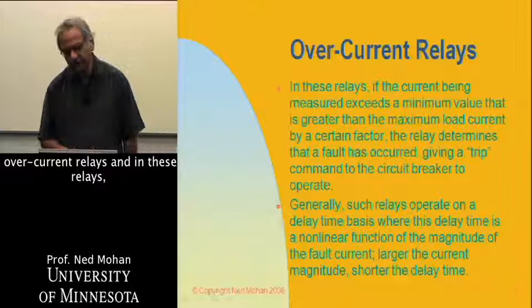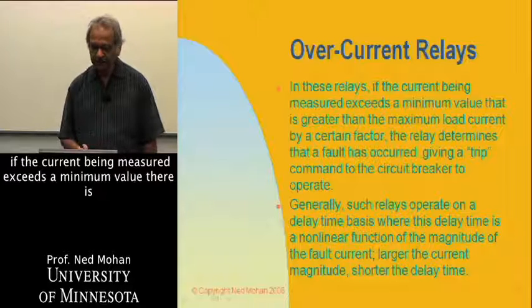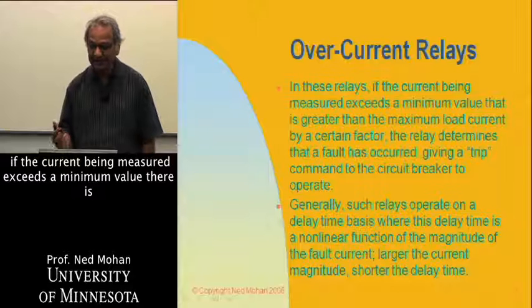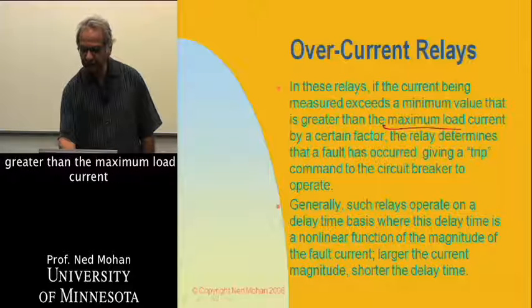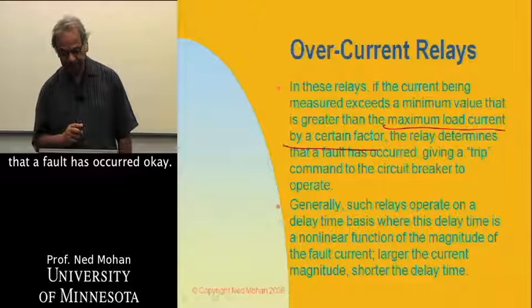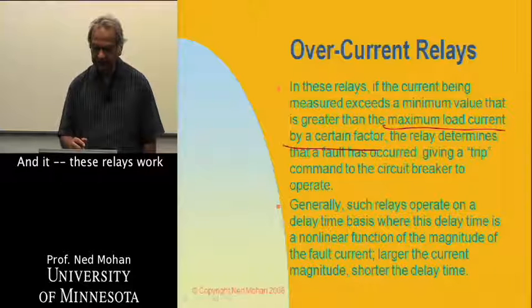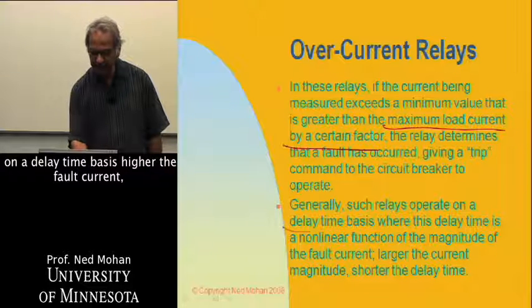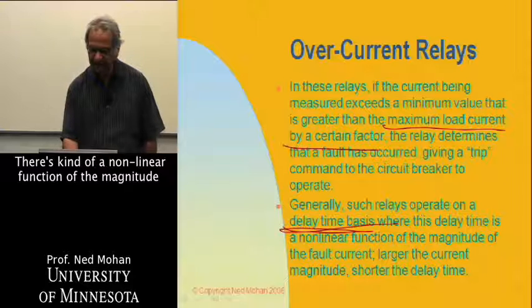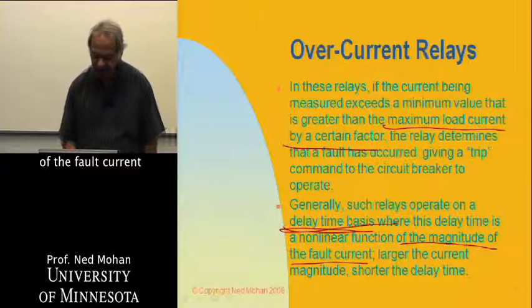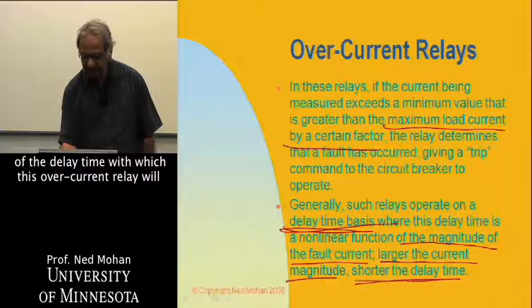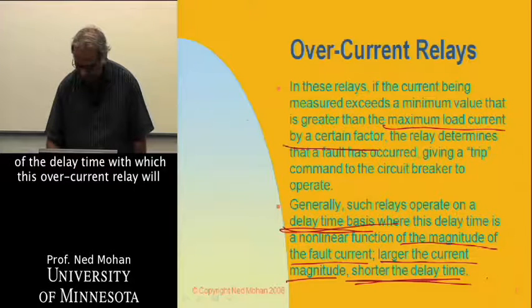Then we have overcurrent relays. In these relays, if the current being measured exceeds the minimum value — which is greater than the maximum load current by a certain factor — then the relay determines that a fault has occurred. These relays work on a delay time basis: the higher the fault current, the faster it will operate. It is a nonlinear function of the fault current magnitude, meaning a larger current magnitude results in a shorter delay time.